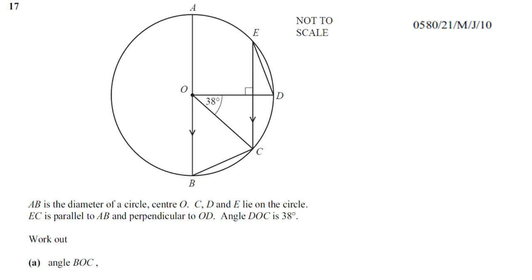AB is the diameter of a circle, center O. C and D and E lie on the circle. EC is parallel to AB and perpendicular to OD. All of those things are shown on the diagram.